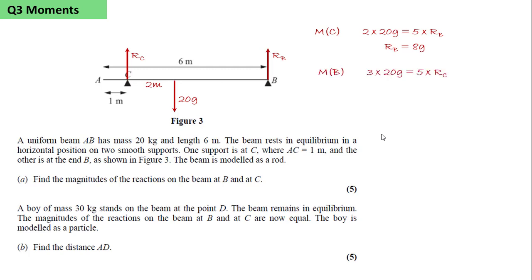Similarly, we can take moments about B. Here we get 3 times 20g, as the anticlockwise moment, equals 5 times RC, the clockwise moment. And so RC equals 12g.